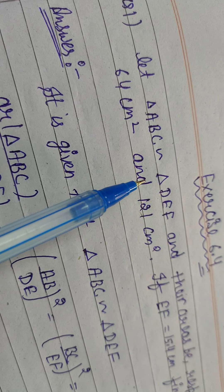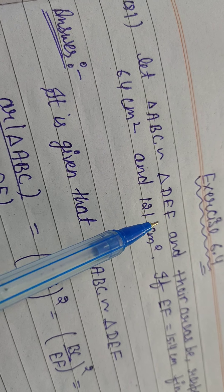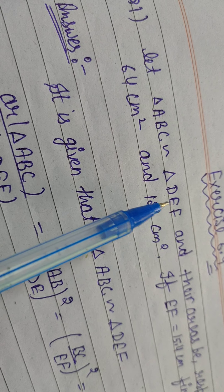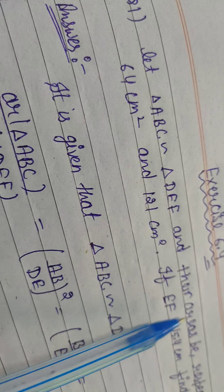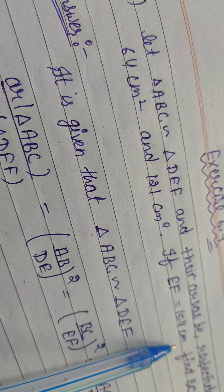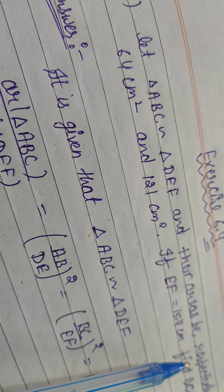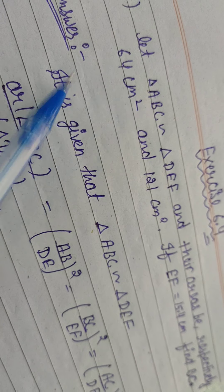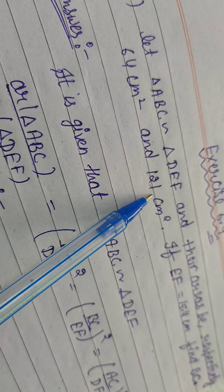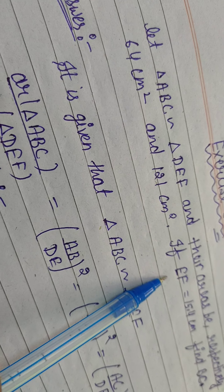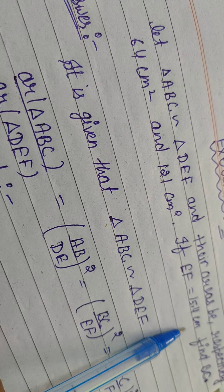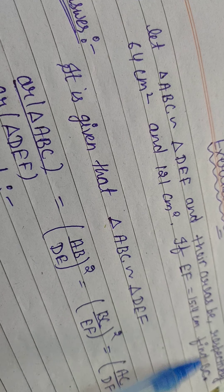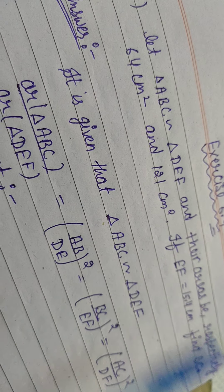Let triangle ABC be similar to triangle DEF. आपका triangle ABC जो है वो triangle DEF का बिलकुल similar है। And their areas are respectively 64 cm square and 121 cm square. If EF is equal to 15.4 cm, then find BC. EF आपके पास given है, BC आपको find करने है।